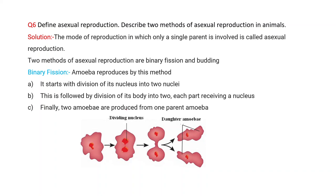Next question: Define asexual reproduction and describe two methods of asexual reproduction in animals. The mode of reproduction in which only a single parent is involved is called asexual reproduction. Two examples are binary fission and budding. Amoeba reproduces by binary fission.